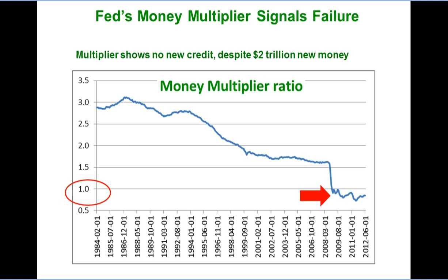How is it possible? Doesn't money always go somewhere? Not in a fiat money system. In the fiat money system, money can disappear just like it came from nowhere. This happens because of fractional reserve banking.